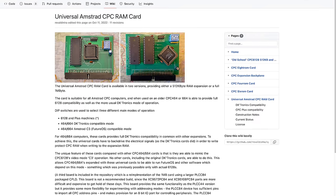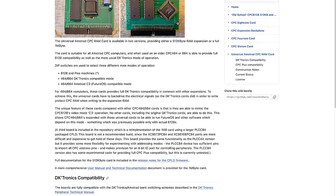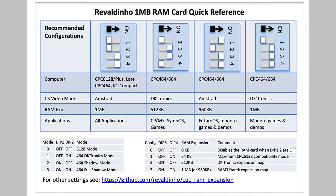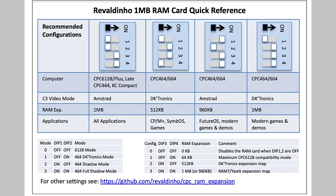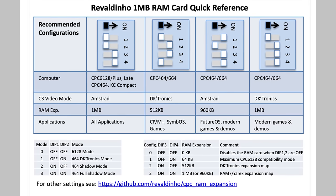I could try to design a RAM expansion from scratch, but instead I'm going to build one from an existing project. Several years ago, user Revaldino created an add-on card for the Amstrad CPC that adds a full 1MB of RAM. He made it open source and put everything on GitHub — I really love it when people do that instead of trying to keep things proprietary. Even though the theory of RAM expansion is pretty simple, the actual implementation gets more complicated with lots of little details, so it makes a lot of sense to start from there.